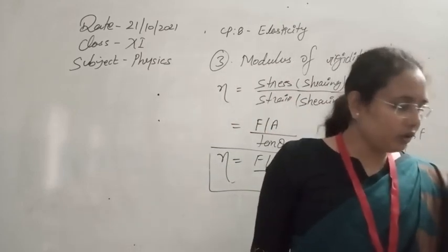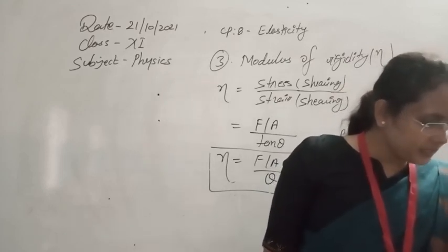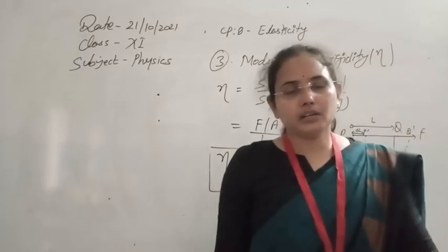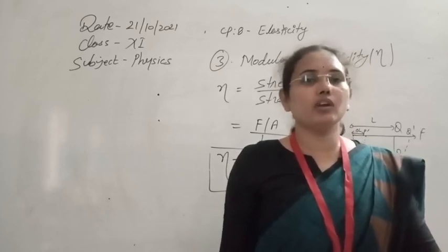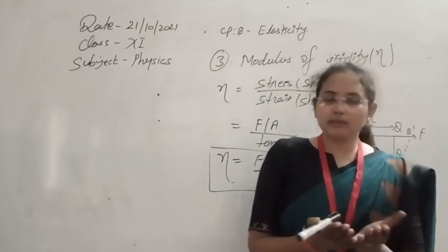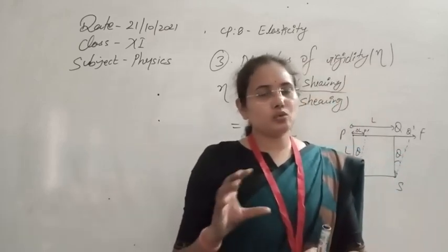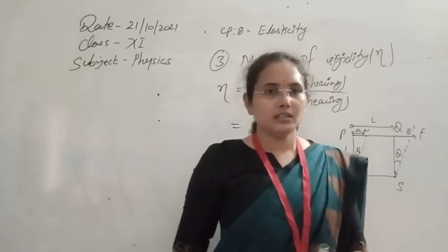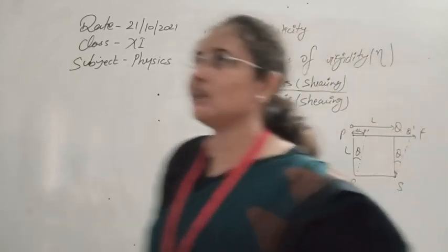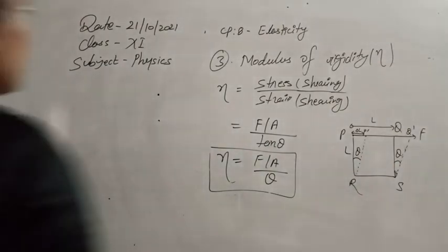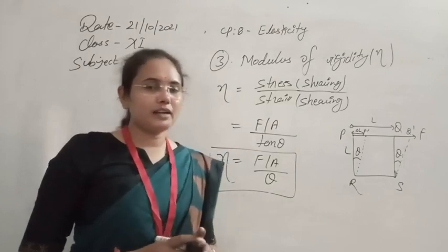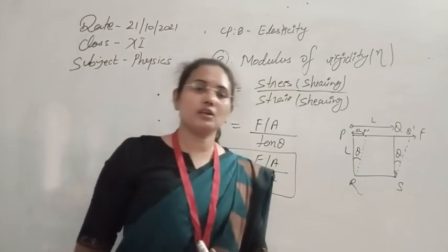Modulus of rigidity is applicable to solid bodies. For an ideal liquid, the modulus of rigidity is zero because an ideal liquid does not acquire any fixed shape or size. However, for a liquid at a raised or constrained situation, there can be some modulus of rigidity. So for solids, all three types of elasticity — modulus of rigidity, bulk modulus, and Young's modulus — are applicable, and we choose materials based on these properties.